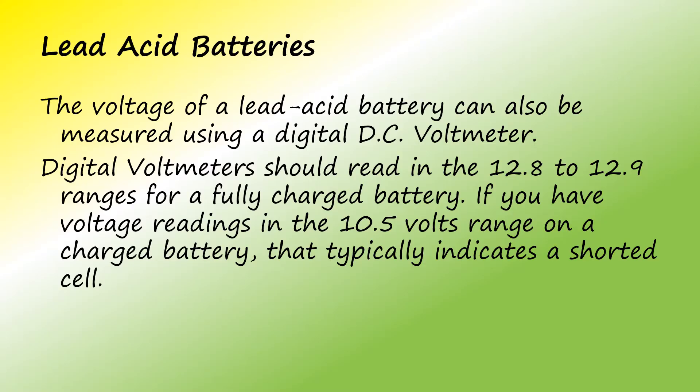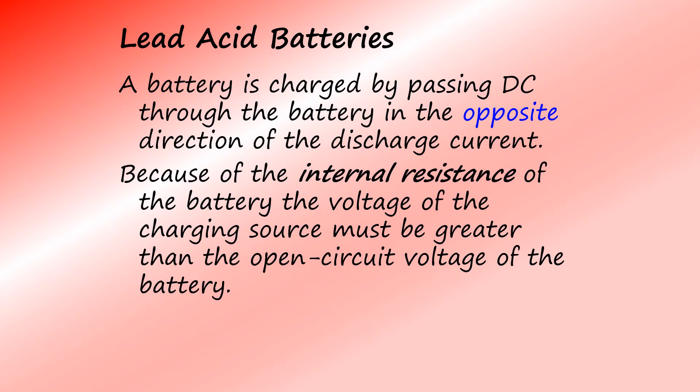A fully charged 12 volt lead acid battery should read about 12.8 to 12.9 volts on a DC voltmeter. Readings in the 10.5 volt range indicate a shorted cell. A battery is charged by passing direct current through the battery in the opposite direction of the discharge current. Because of the internal resistance of the battery, the voltage of the charging source must be greater than the open circuit voltage of the battery.